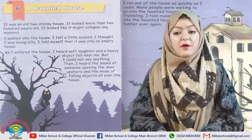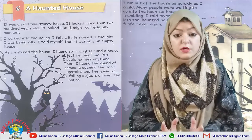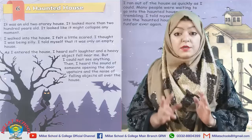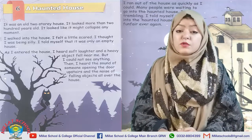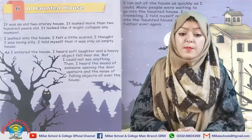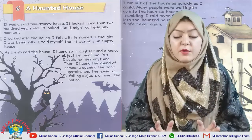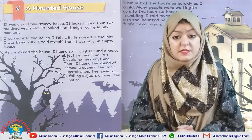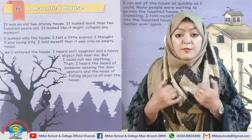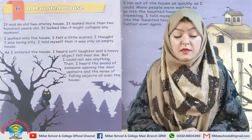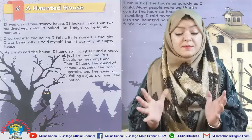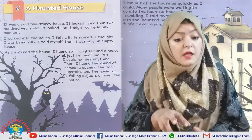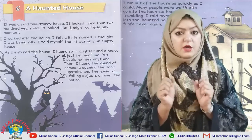Now let's go back to the beginning and do the comprehensive reading. I will explain all the sentences. 'It was an old two-story house' — it was a very old two-story house. 'It looked more than two hundred years old' — it seemed like it was two hundred years old, a very old house. 'It looked like it might collapse any moment' — it seemed like the house might fall down suddenly at any moment. We wouldn't want to enter a house that we suspect might collapse.